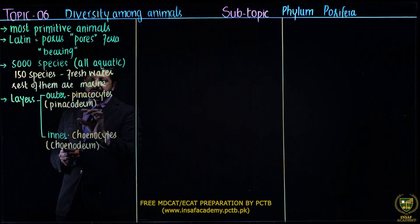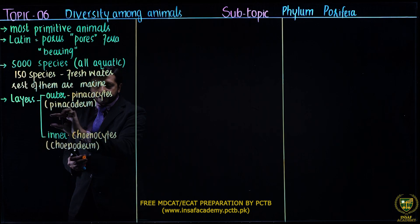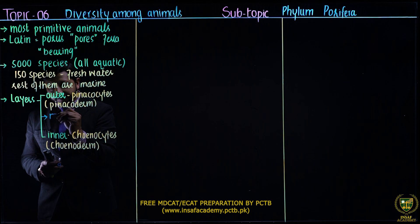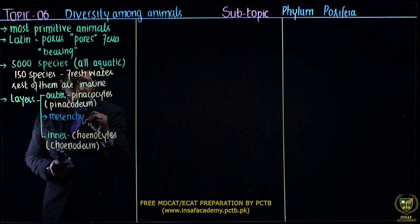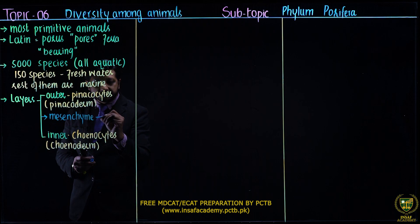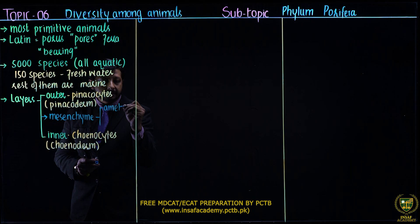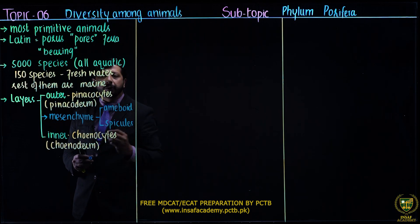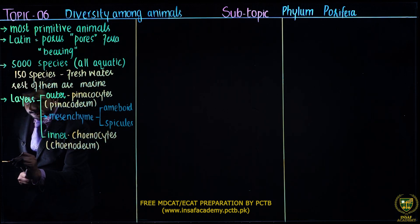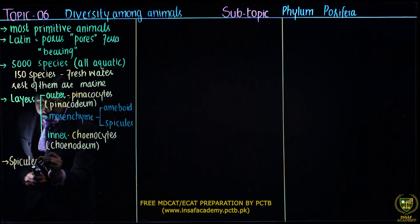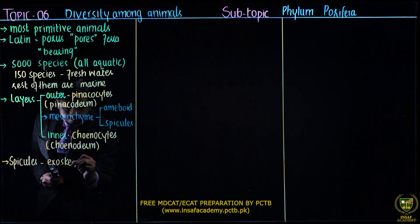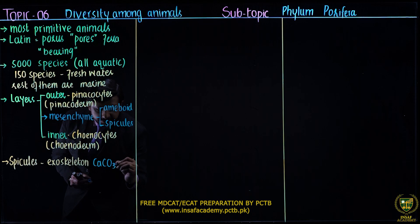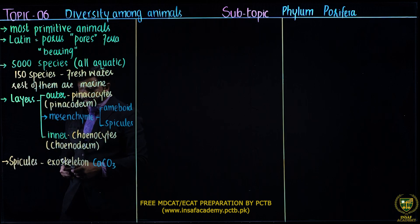In between these two cell layers, there is a non-cellular layer called the mesenchyme. This mesenchyme is composed of two major things: amoeboid cells and spicules. The spicules form the exoskeleton and are made up of calcium carbonate.